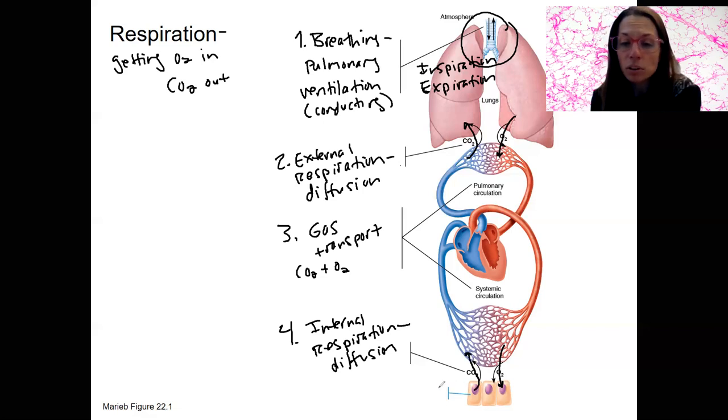What do you think this blue little line here is? This is a part of the process that is not going to be considered as part of our respiratory system. But I want to tell you what it is. This is cellular respiration. So inside the cells, we've got glucose and oxygen making ATP, cellular respiration.